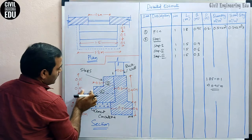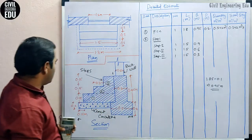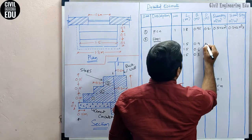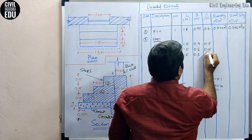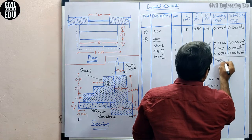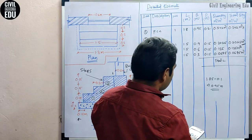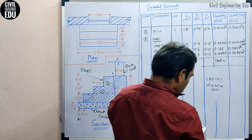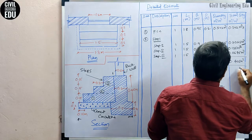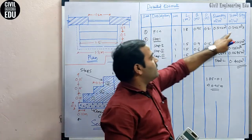From here to here we deduct 0.3 for each step. The depth or thickness of each step is 0.15 meters. So the total quantity: step one gives 0.135 meter cube, plus step two gives 0.135, plus step three gives 0.2025, totaling 0.405 meter cube. This is the brickwork quantity for the three steps, and the PCC quantity is 0.342 meter cube.